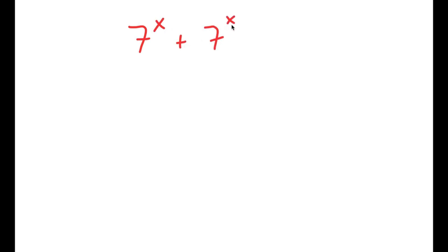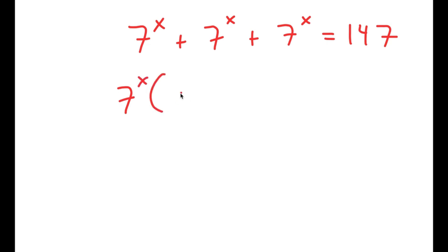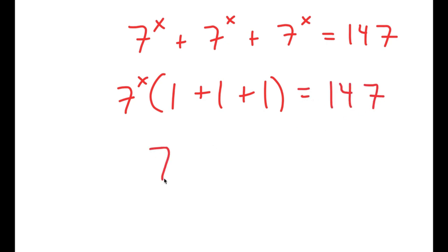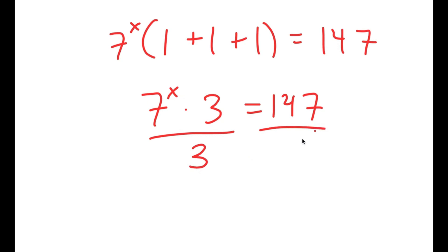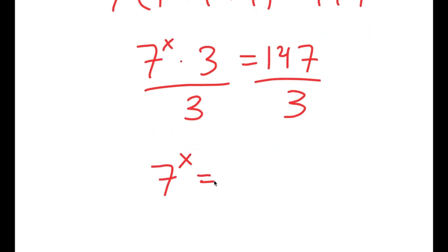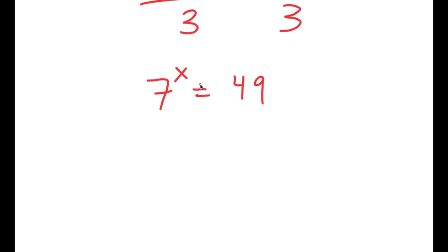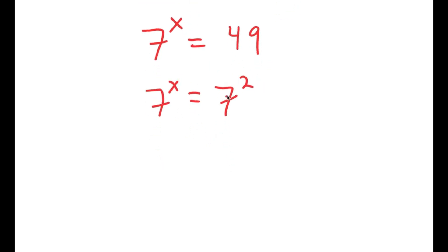In this video, I'm going to solve the equation 7 to the power of x plus 7 to the power of x plus 7 to the power of x equals 147. To start, I'll factor out 7 to the power of x: 7 to the power of x times 1 plus 1 plus 1 equals 147, so 7 to the power of x times 3 equals 147. Dividing both sides by 3 gives 7 to the power of x equals 49. Since 49 equals 7 squared, I have 7 to the power of x equals 7 to the power of 2, meaning x equals 2.